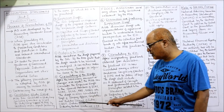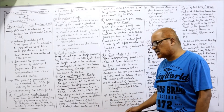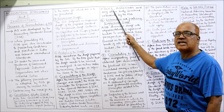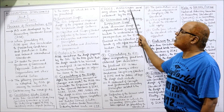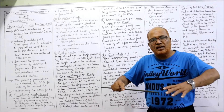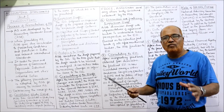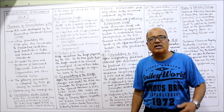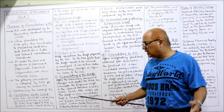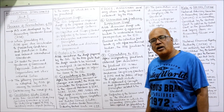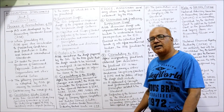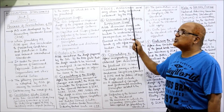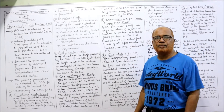The draft is also circulated to the Department of Company Affairs, Comptroller and Auditor General of India, Central Board of Direct Taxes, Indian Banks' Association, and industry bodies such as CII — Confederation of Indian Industries, FICCI — Federation of Indian Chamber of Commerce and Industry, and ASSOCHAM — Association of Chamber of Commerce and Industry of India. These are the various professional and industrial organizations to whom the exposure draft is circulated.